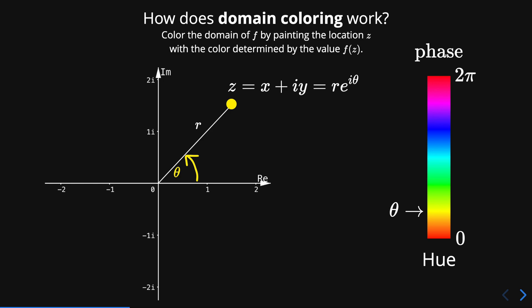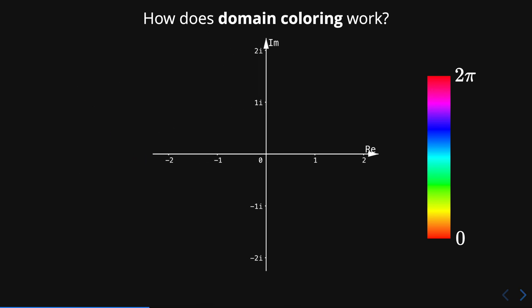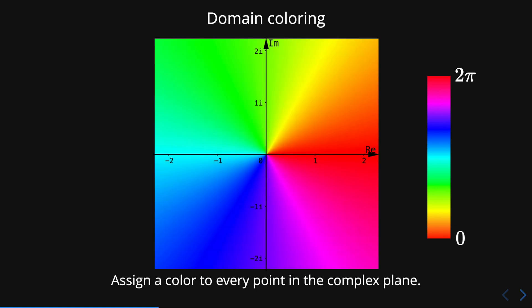For different values of the phase, we will have different colors of the point. We can plot one by one every complex point on the plane until we have colored the full complex plane.